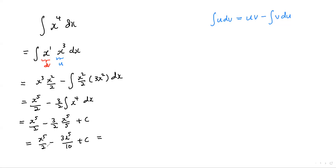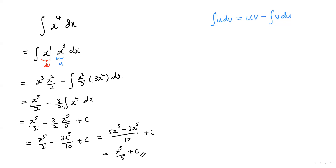Now integrating x to the power of four gives x to the power of five over five plus c. Let's simplify: this is x to the power of five over two, minus three x to the power of five over ten plus c. Combining gives five x⁵ minus three x⁵ over ten, which is two x⁵ over ten, simplifying to x to the power of five over five plus c — the same result as using the normal method.